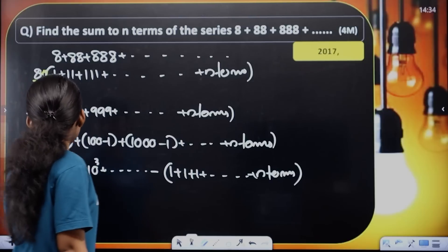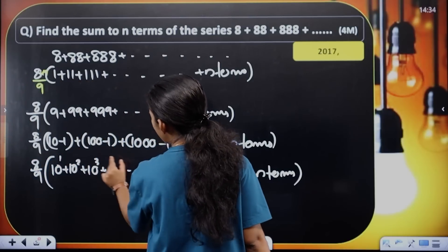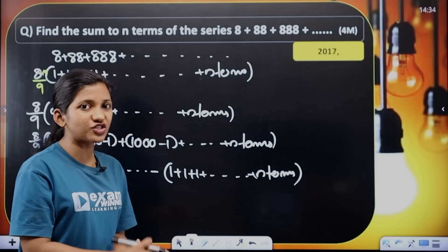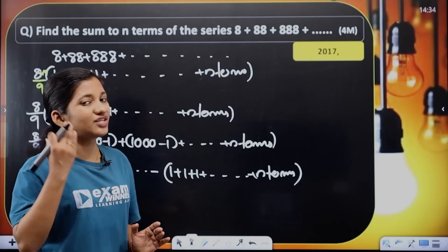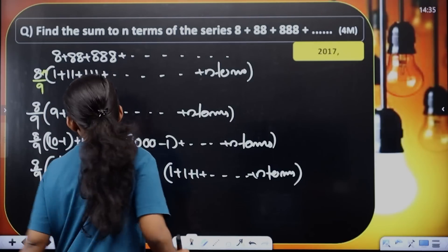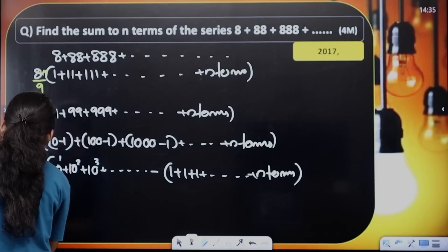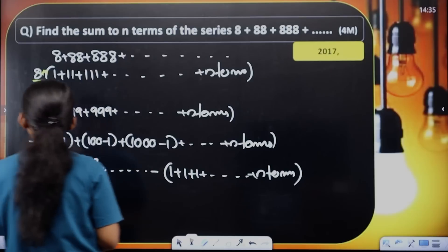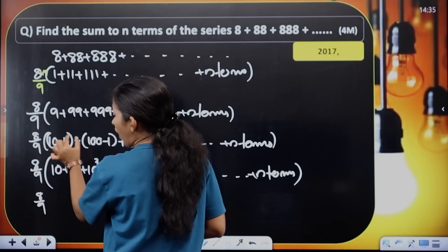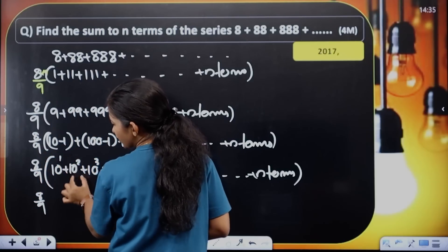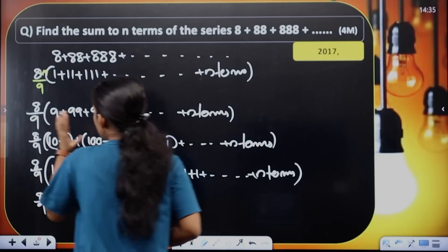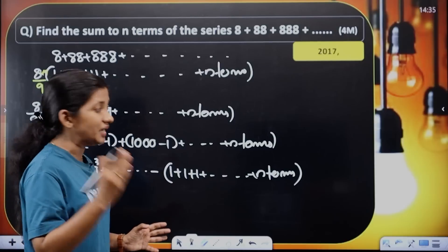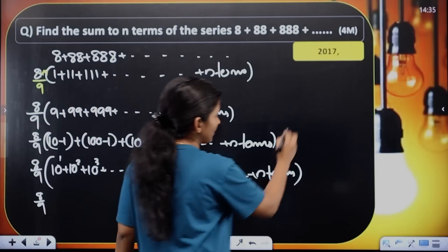The series 10 plus 10 squared plus 10 cubed plus ... up to n terms is a geometric progression. The first term a equals 10 and the common ratio r equals 10. The sum of a GP is given by Sn equals a into (r to the power n minus 1) divided by (r minus 1).